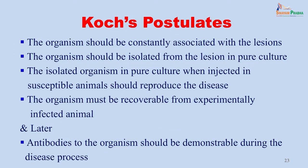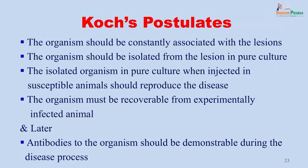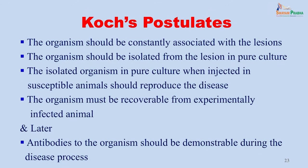Koch's postulates state that the organism should be constantly associated with the lesion — if a patient has five abscesses, all should have the same organism. The organism should be isolated from these lesions in pure culture. The isolated organism in pure culture, when injected into susceptible animals, should reproduce the disease. The organism must be recoverable from the experimentally infected animals. A fifth postulate was added later: antibodies to the organism should be demonstrable during the disease process. Some organisms have not followed all of Koch's postulates — Mycobacterium leprae, for example, has not been grown in culture, though antibodies to the lepra bacilli have been demonstrated in patients' blood.